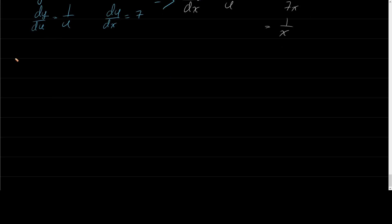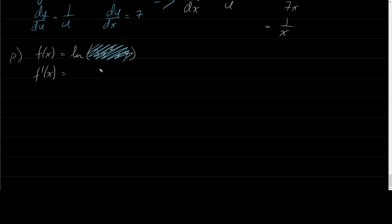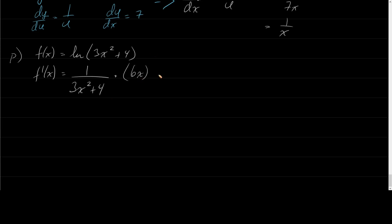Let's say f of x equals ln of 3x squared plus 4. f prime of x: by the chain rule, the outside function is ln of something, so the derivative is 1 over that thing — 1 over 3x squared plus 4 — times the derivative of the inside function. The inside is 3x squared plus 4, so the derivative is just 6x. I can rewrite this as 6x over 3x squared plus 4.